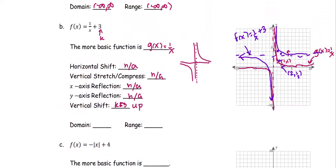For the domain, the domain is the set of all real numbers except 0, expressed as negative infinity to 0 union 0 to positive infinity. The range is from 3 to positive infinity, and anything below 3 to negative infinity — expressed as negative infinity to 3 union 3 to positive infinity.